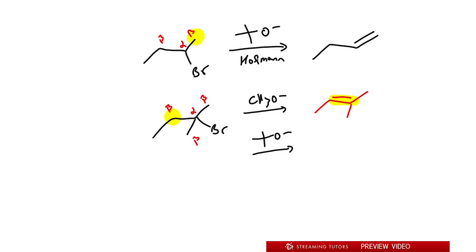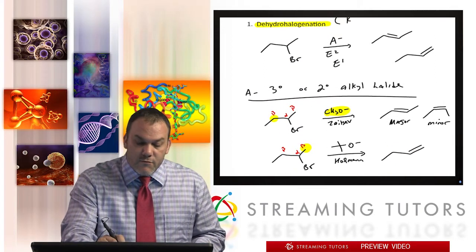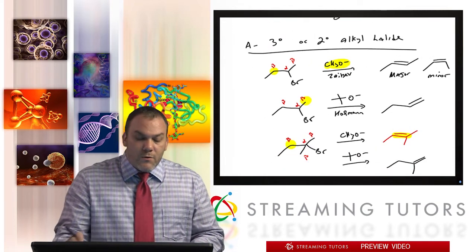There's no cis/trans for that product because the end carbon of the double bond has two methyls — you can't have cis/trans when the same group appears twice on the same double bond carbon. With the bulky base (Hoffman), we pull from one of the methyl beta carbons since they have three H's, forming a terminal alkene. That product also has no cis/trans. So this is our E2 review — all E2 and E1 summary.